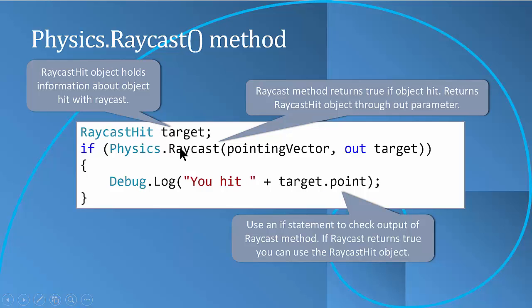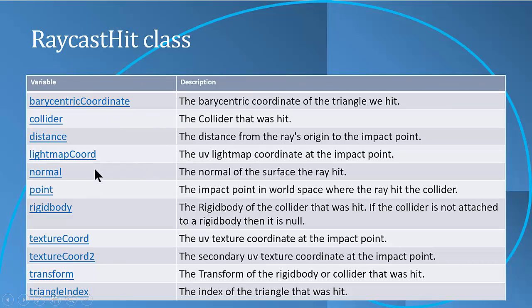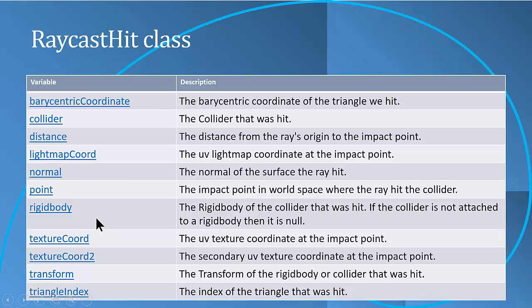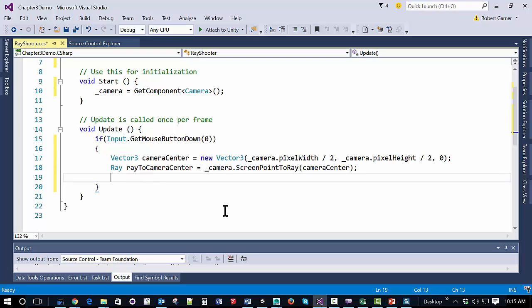The RaycastHit class has a number of variables and attributes. We will be using the RigidBody and the point variable. The point variable returns the three-dimensional point in world space where the hit occurred. The RigidBody returns a reference to the collider that was hit, and you can use that RigidBody's GameObject attribute to get access to the object that was hit.